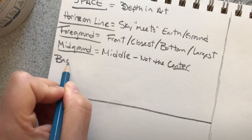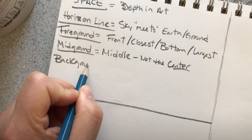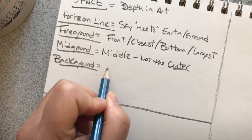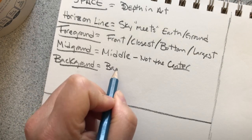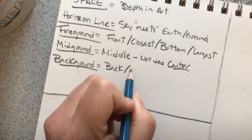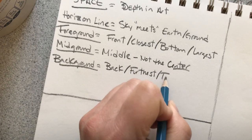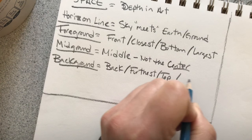Next one we have is the background. Background is the stuff that's in the back. So it's gonna be things that are towards the back. It's gonna appear to be the furthest, it's gonna be drawn towards the top of your page, and it's going to appear to be the smallest.